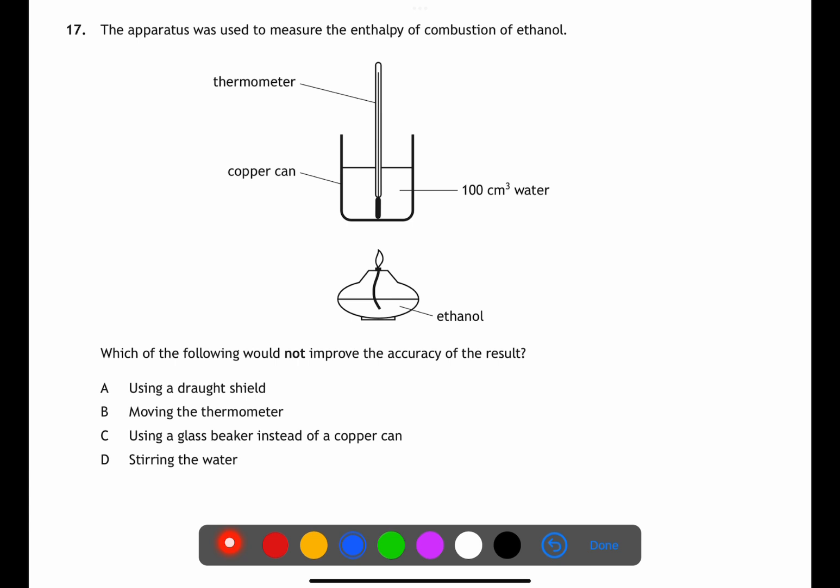For question 17 we're looking at measuring the enthalpy of combustion of ethanol. We have to find which of these would not improve the accuracy of the result. Using a draft shield would improve the accuracy by preventing heat loss. Moving the thermometer would improve the accuracy as you would be measuring the temperature of the water rather than the can. Using a glass beaker instead of a copper can would not improve the accuracy of the result as glass does not conduct heat as well as copper. Stirring the water would improve the accuracy as you would get a more even temperature throughout the water.